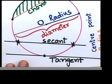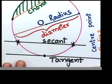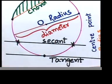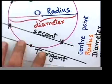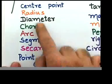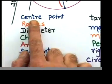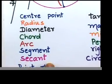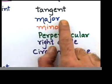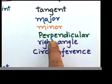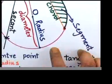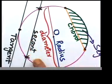So those are the major keywords you need to know to start this topic. There are many other ones but we don't need to learn them now. Keywords and spellings are there — please learn them. We finished: center point, radius, diameter, chord, arc, segment, secant, and tangent. Major means the bigger one, minor means the smaller one. Circumference is the length of the outline of the circle.